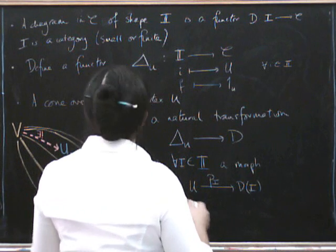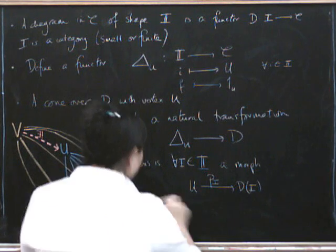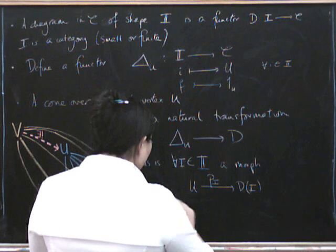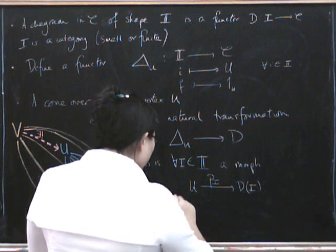But we've got a naturality condition here. We've run out of space. Never mind. Such that. So now we've got to say for all morphisms in the category that we started with. So for all morphisms, f from i to i primed in our shape category, we've got to have something commuting.